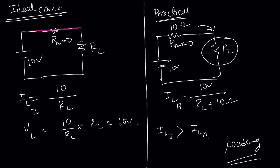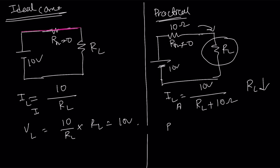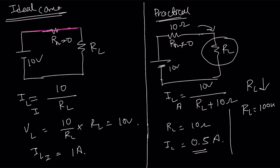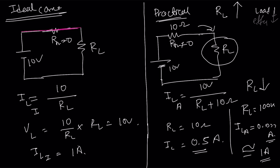The loading effect will be higher when RL is lower. Suppose RL equals 10 ohms: then IL will be 0.5 ampere, whereas IL ideal would be around 1 ampere. So due to the loading effect, we got only 50% of the ideal value. Now, another case: suppose RL is 100k ohms. At that time, IL actual will be approximately 0.999 ampere, very close to 1 ampere. So the loading effect is much lower. The loading effect depends on how much current the load takes from the circuit.